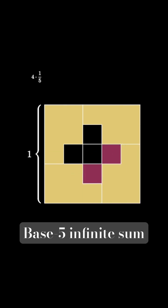If we shade 4 of the 5 remaining squares, we then shade an additional 4 times 1 over 25 of the original area.